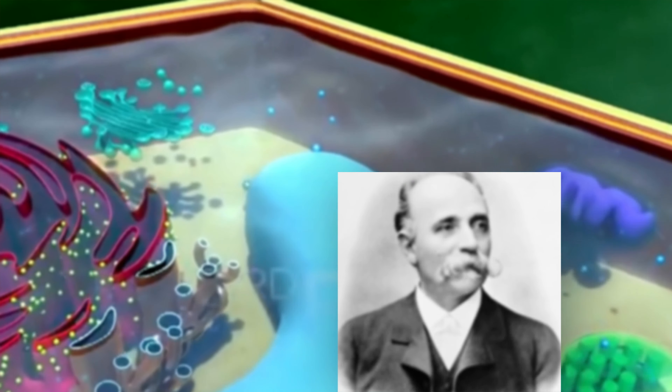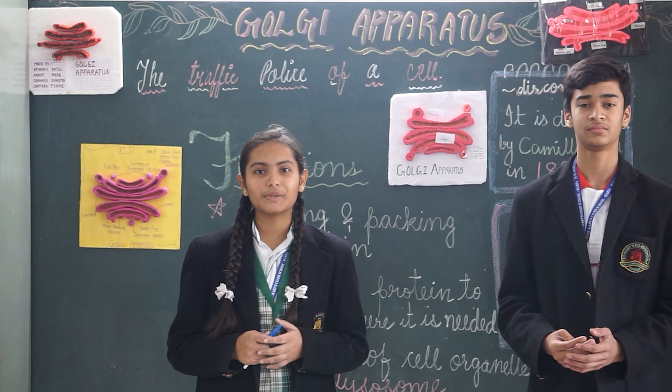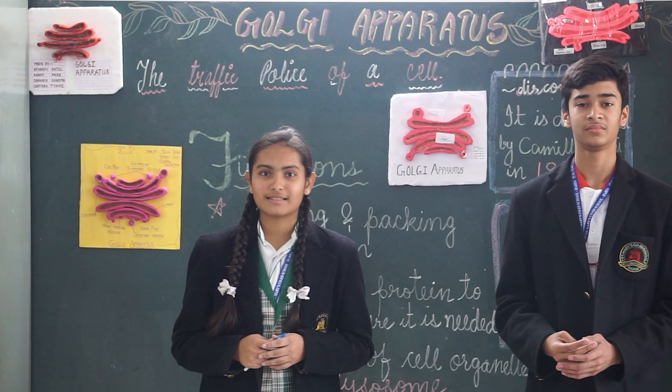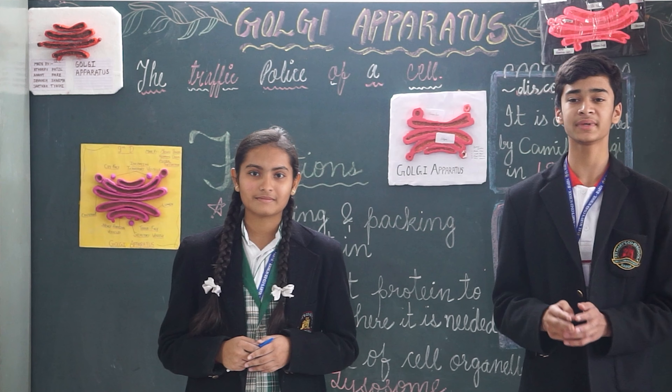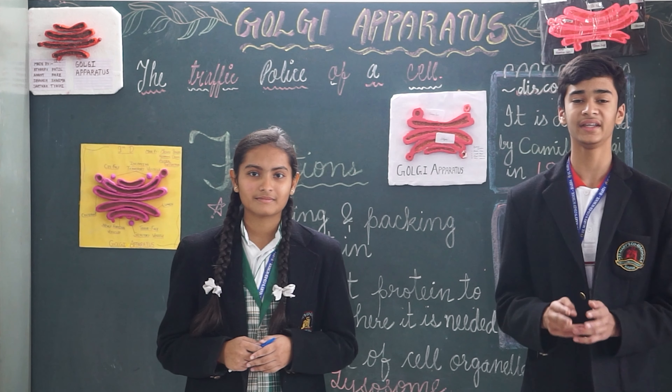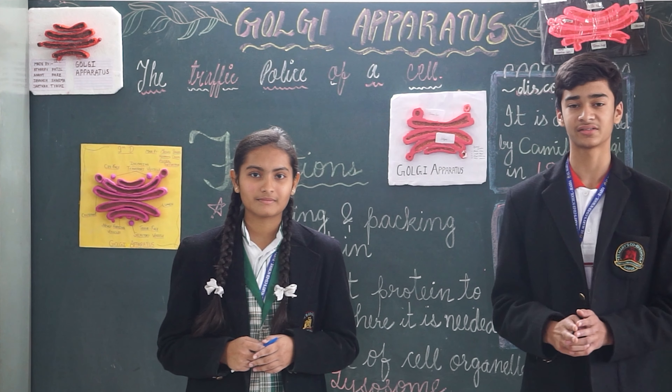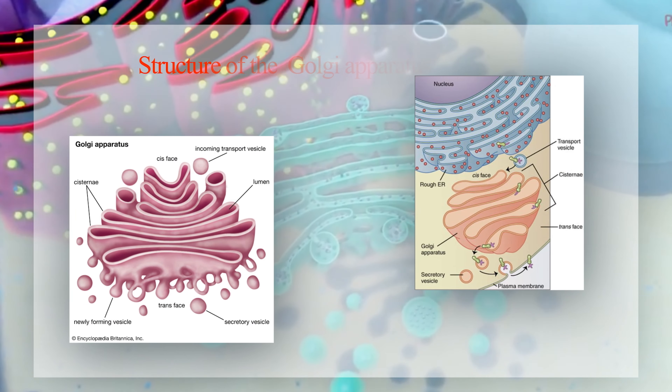Our body is made up of millions of cells. Each cell comprises different cell organelles. Golgi body is one of them. Basically, each cell has its own structure, function, and location — as does the Golgi apparatus. First of all, let us talk about its location and origin.